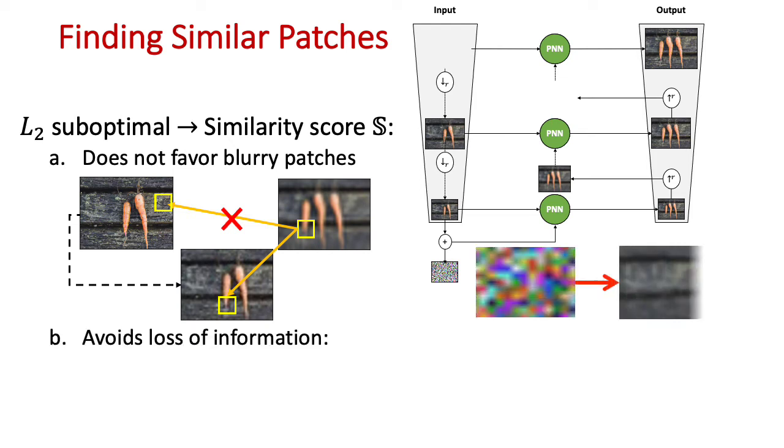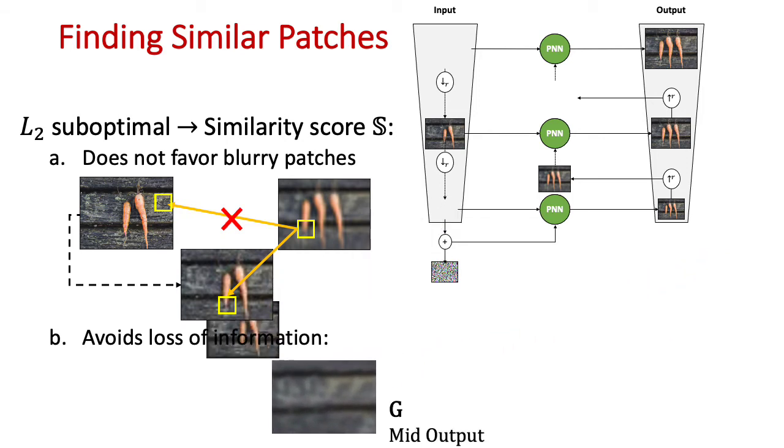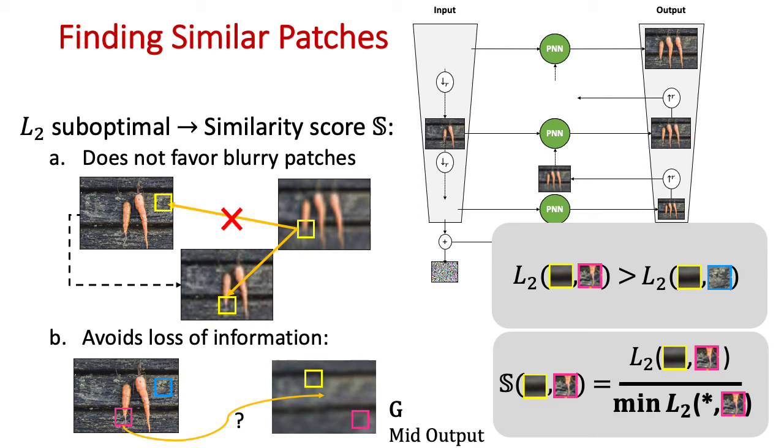Second, it avoids loss of information. We may be unable to produce all of the patches if we use just vanilla L2. Instead, we check how well each input patch is represented in the output. This is simply done by searching for nearest neighbors in the opposite direction and then normalizing by that distance.